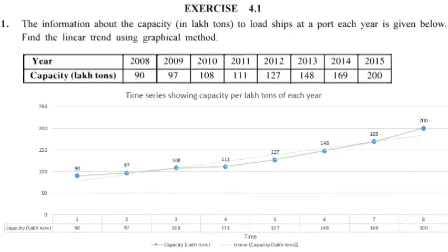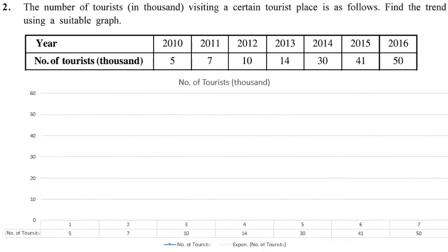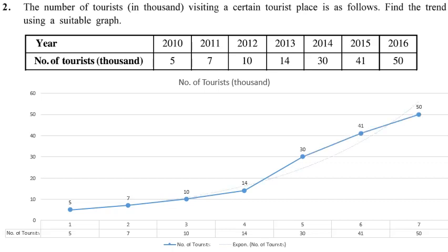Question 2: the data gives years and the number of tourists visiting a certain tourist place. We convert the years into 1 through 7. The values are 5, 7, 10, 14, 30, 41, 50. Since the data was rising continuously, a straight line is not suitable, so a curvy trend line is drawn. The line curves upward at the end, reflecting the nature of the data.